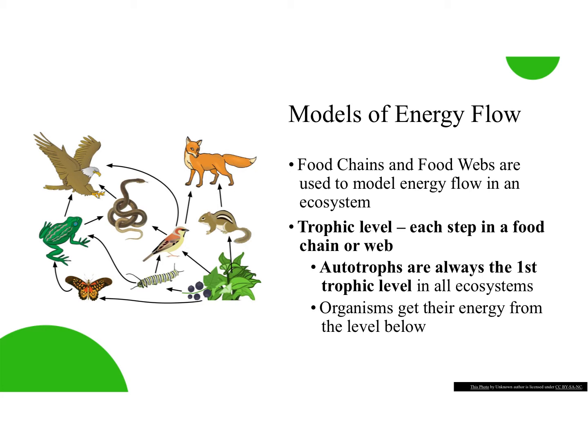Now we're going to look at how we model how energy flows throughout an ecosystem — food chains, food webs, and ecological pyramids. Before we look at those, I want to define a few terms. A trophic level describes each step in a food chain, food web, or pyramid. No matter what kind of diagram we're looking at, autotrophs are always going to be in that first trophic level because they produce energy on their own. Organisms always get their energy from the level directly below them.